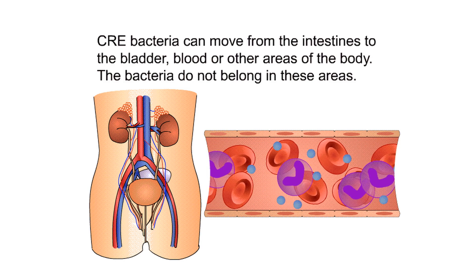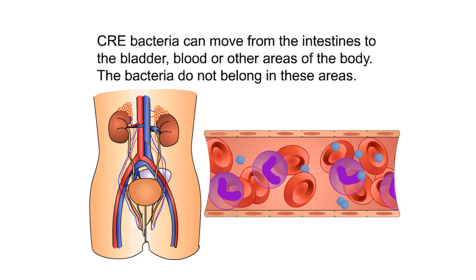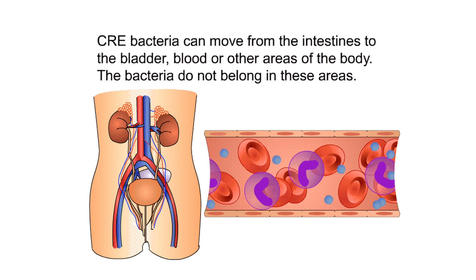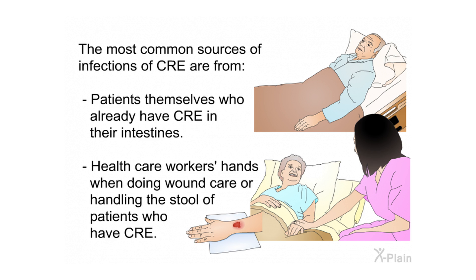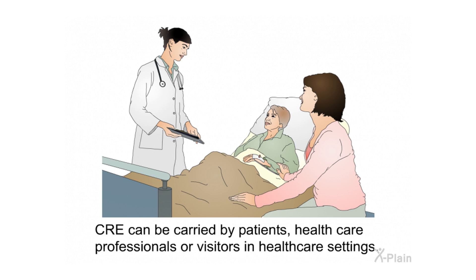CRE bacteria can move from the intestines to the bladder, blood, or other areas of the body where they do not belong. CRE are most commonly spread by touch and can easily spread from person to person. The most common sources of CRE infection are from patients who already have CRE in their intestines, and from healthcare workers' hands when doing wound care or handling the stool of patients who have CRE. CRE can be carried by patients, healthcare professionals, or visitors in healthcare settings.